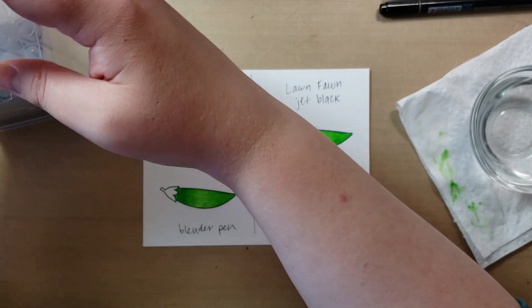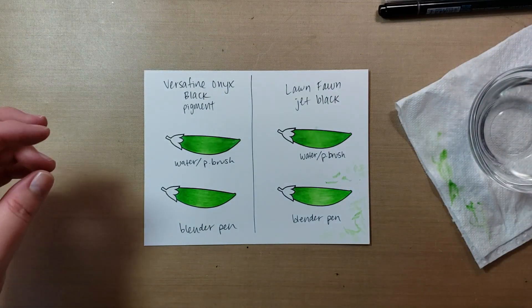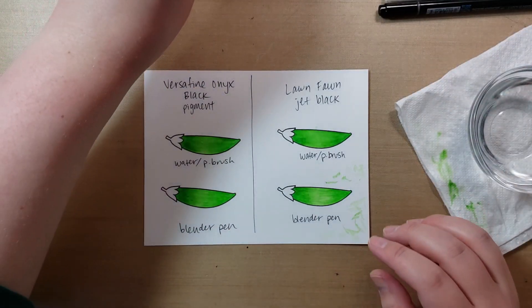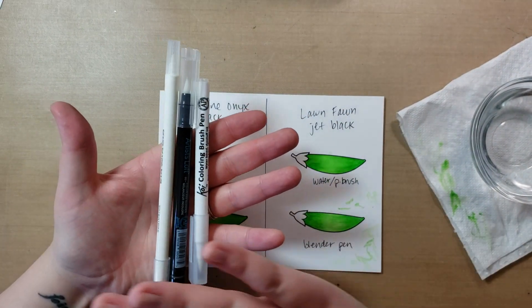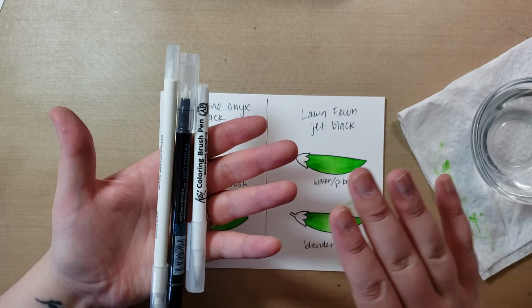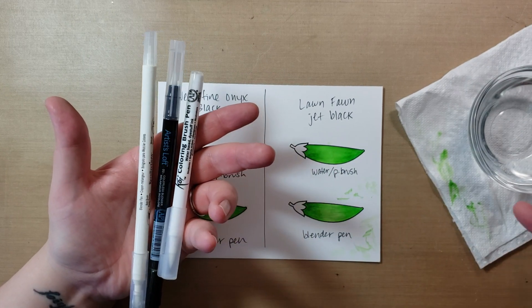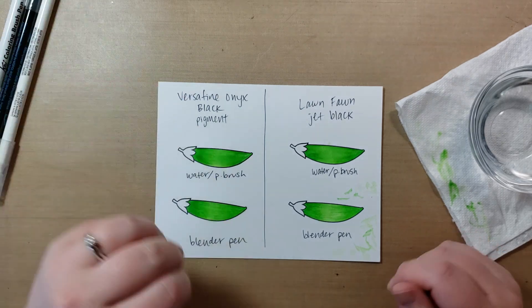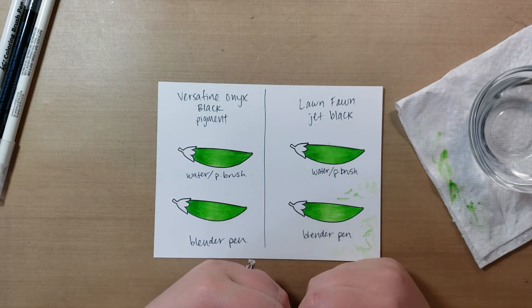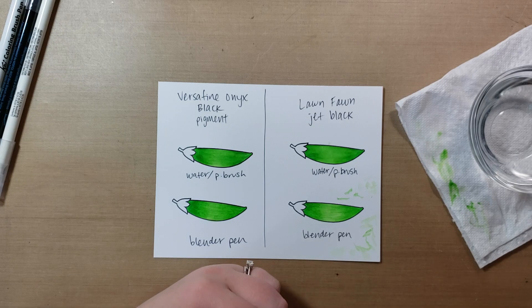I just wanted to cover my thoughts on basically Zig versus Arteza, the two major watercolor pens that I've seen, and the difference between using a blender pen, which I just discovered was a thing and a basically just a paintbrush with water. So that is it. And if you have any questions, feel free to let me know down below and I will see you guys next time. Bye.